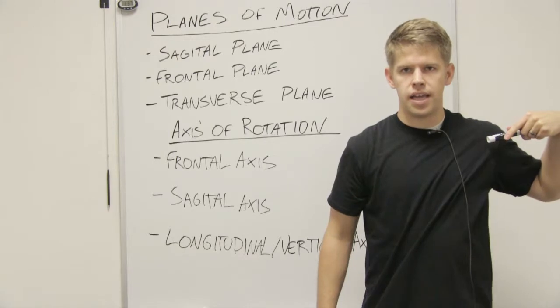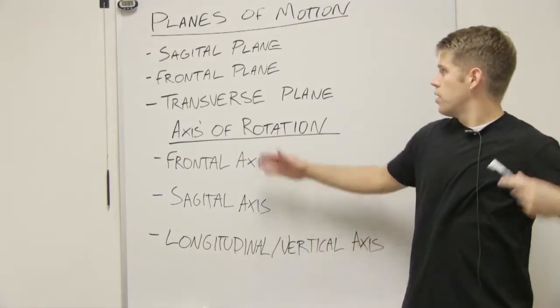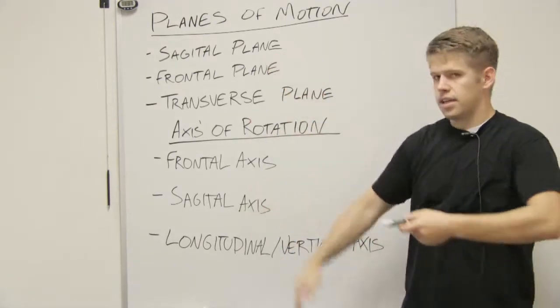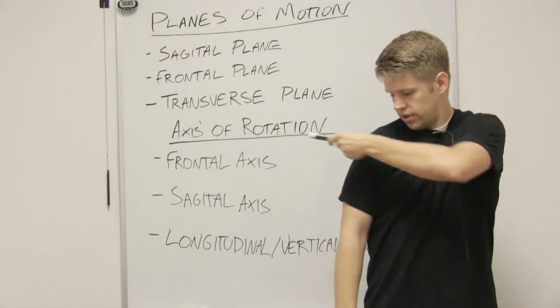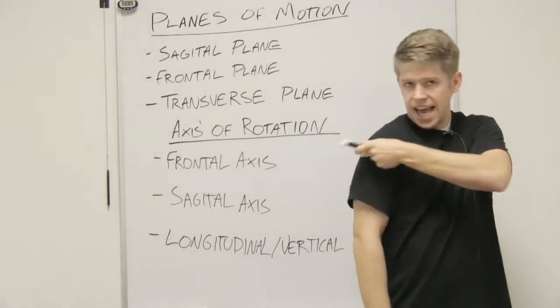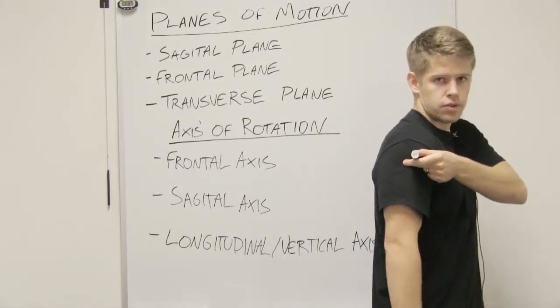If you said the frontal plane, you are correct. So movement in the sagittal plane occurs about the frontal axis. You can see that this is the axis, and it lies in the frontal plane.